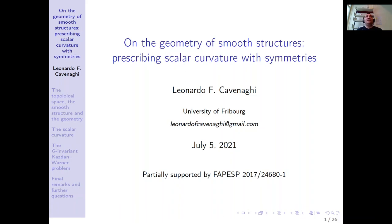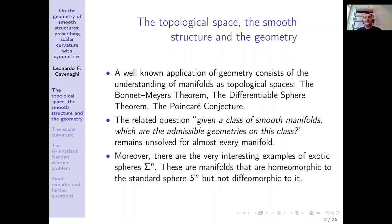I shall approach the Kazdan-Warner problem on determining which functions are the scalar curvature for some Riemannian metric on manifolds, adding the hypothesis that the manifolds carry an isometric effective action by a Lie group. This way, we search for which G-invariant functions can be prescribed as the scalar curvature for G-invariant Riemannian metrics. In order to motivate our work, I will start by recalling the relationship between the topological space, the smooth structure, and the geometry.